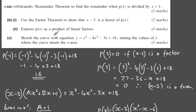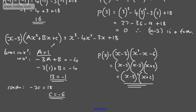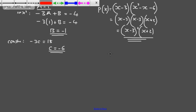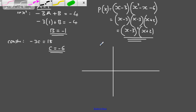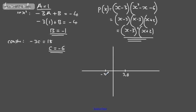In part C, we're asked to sketch the curve y = x³ - 4x² - 3x + 18, stating the values of x where the curve meets the x-axis. The question carries three marks and it's a cubic equation. We have a repeated root at x = 3, so the curve touches the axis there at (3, 0), and a root at x = -2, giving the point (-2, 0). It's a positive cubic coming from the third quadrant.